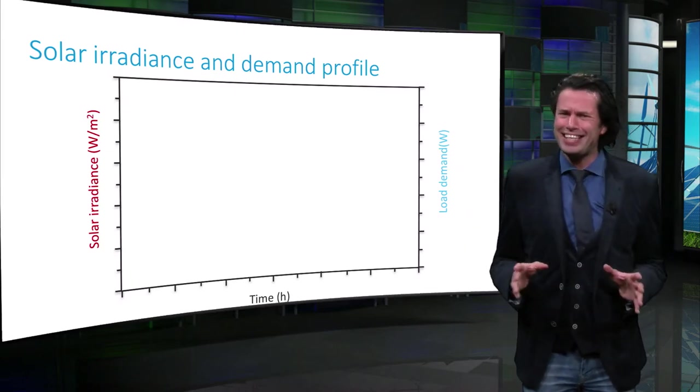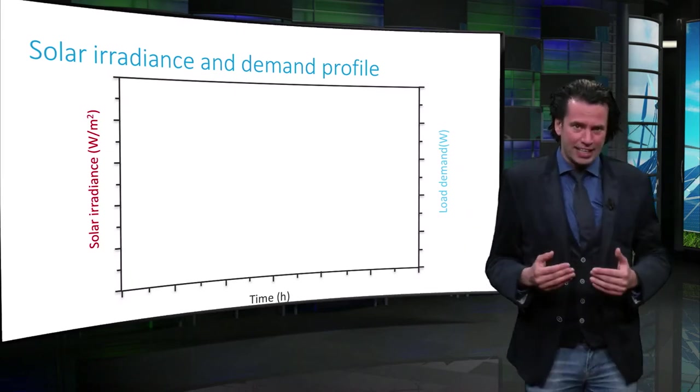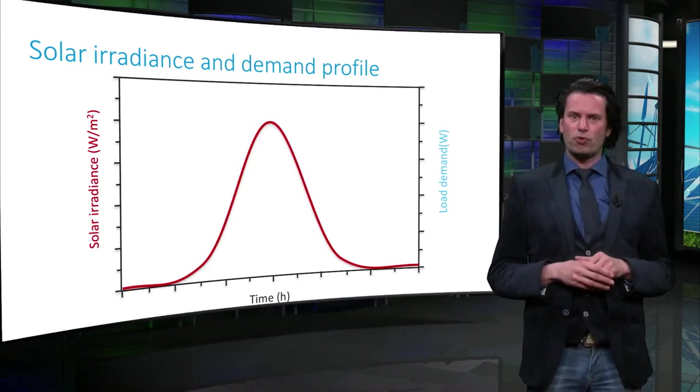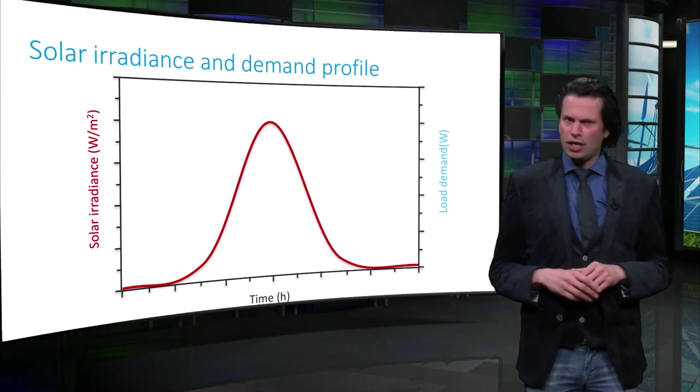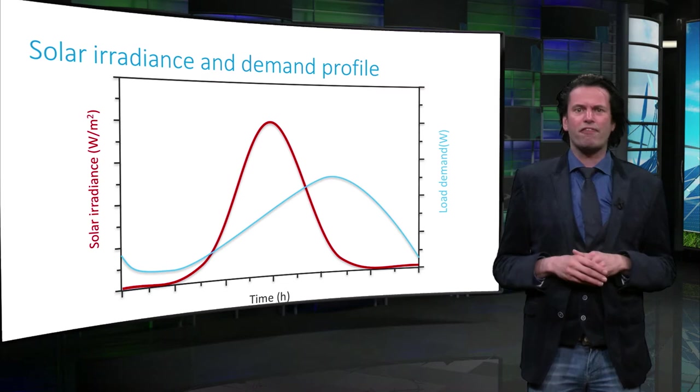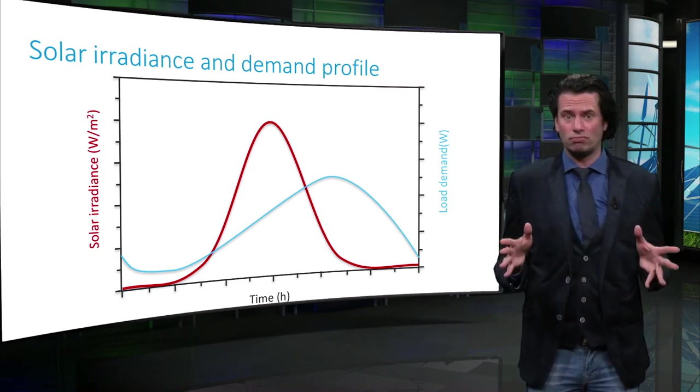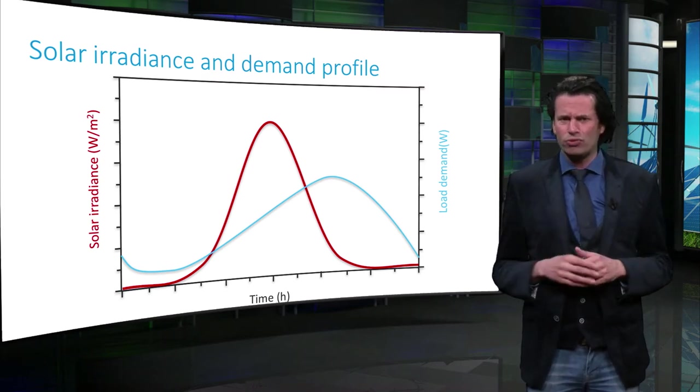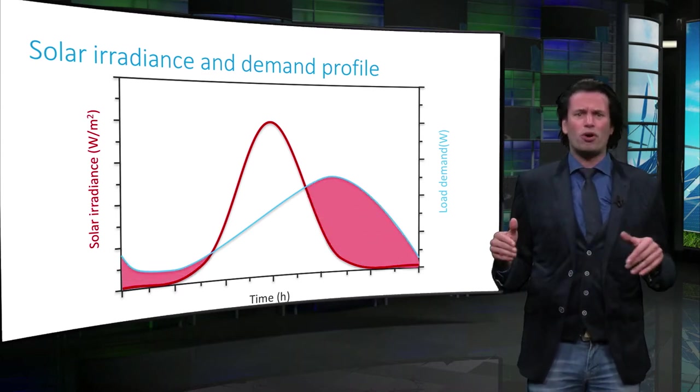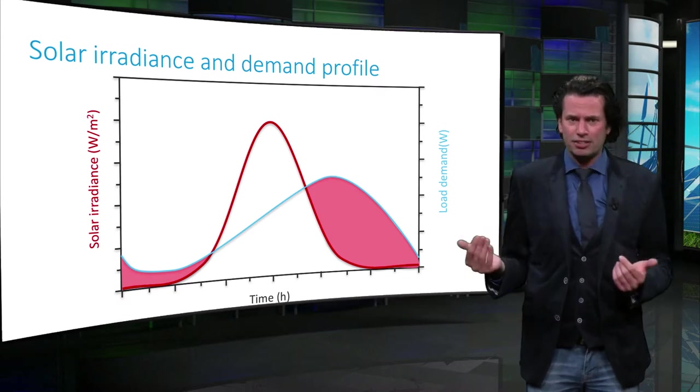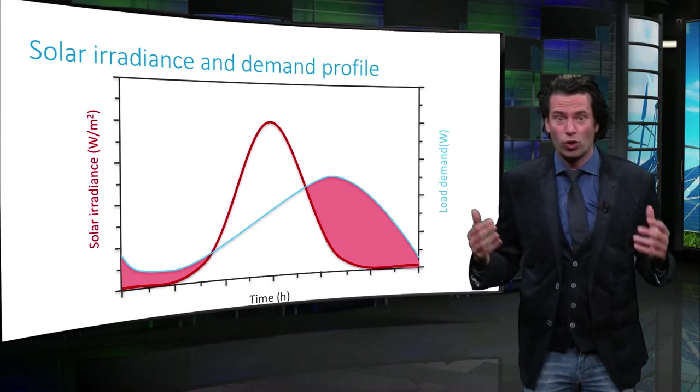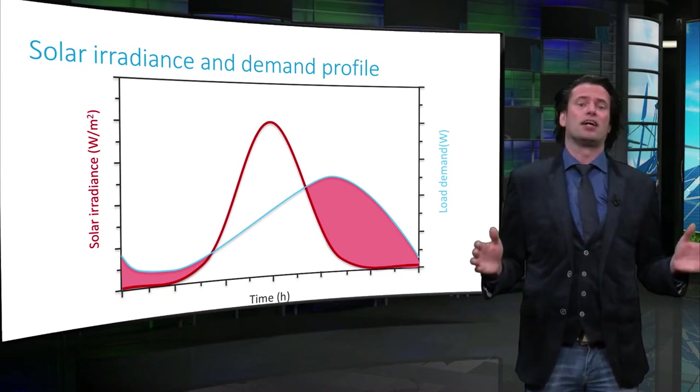In this graph, you can see an example of the daily intermittency. A typical solar irradiance profile is shown during the day. You can also see the load demand, which is significant in the parts of the day where there is no sun. In a standalone system without storage, even though the sun has more than enough power during the day, the system fails to utilize this excess energy to power the loads when the solar power isn't enough.